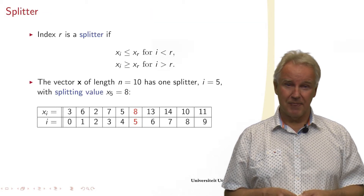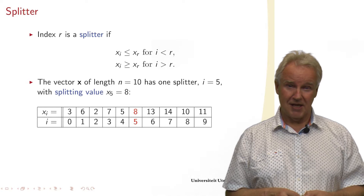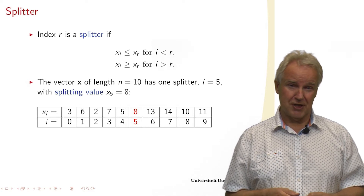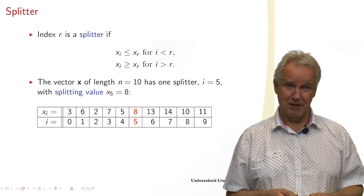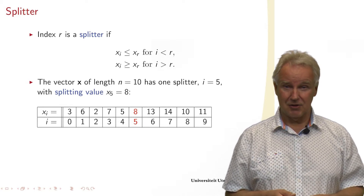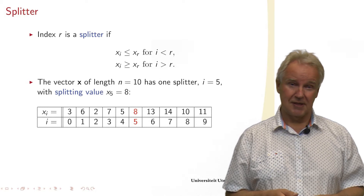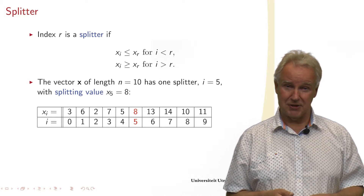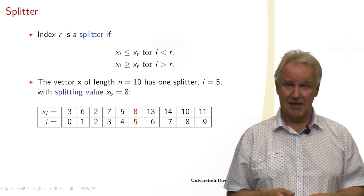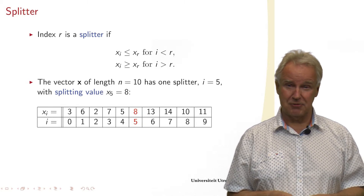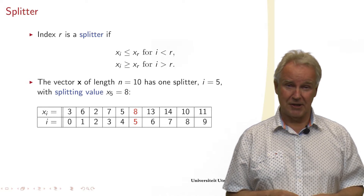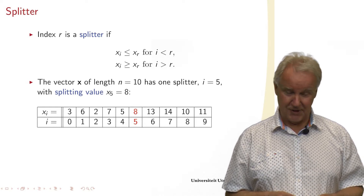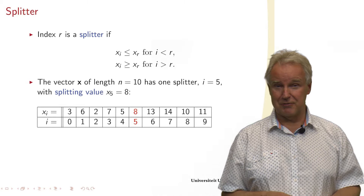A splitter is just an index with a value such that all values to the left — with indices lower than the splitter — are lower in value than the value of the splitter. In this case the splitter value is 8. Everything below 8 you can see to the left: 3, 6, 2, 7, etc. And everything higher is to the right, but within those subintervals they need not be ordered, because that's what the next recursive call will do.